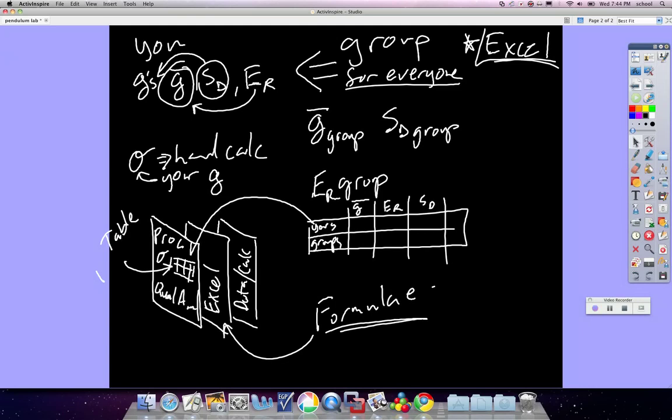So what you're going to want to do is make a table on the front page of your lab after your procedure, right by your uncertainty. Make sure that you list your average gravity, relative error, and standard deviation. Then you're going to include the average gravity, relative error, and standard deviation for the whole group.